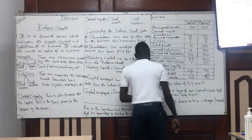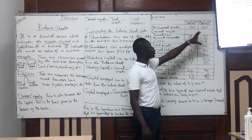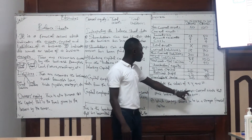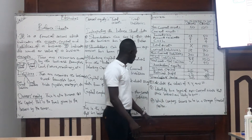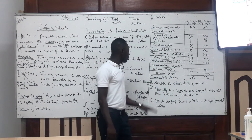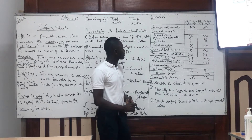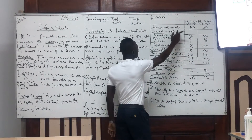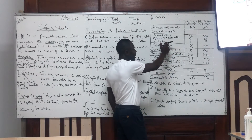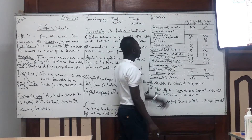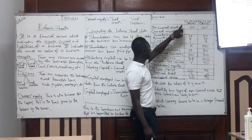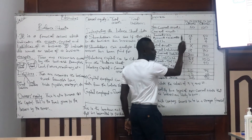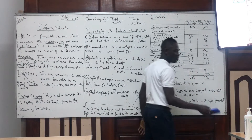Now we have a table comparing KFO Limited and HCO Limited. The questions are: compare the values of X, Y, and Z; identify two types of non-current assets these businesses are likely to own; and which company seems to be in a stronger financial position. For KLO Limited, non-current assets are $50,000; HCO is $21,000. Adding current assets — inventories $12,000, accounts receivable $8,000, and cash $1,000 — gives total assets X equals $71,000 for KLO Limited.